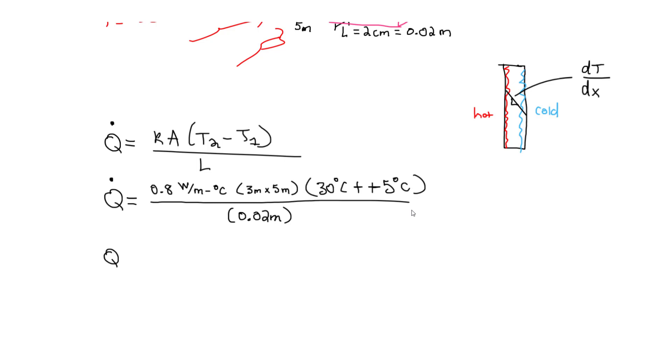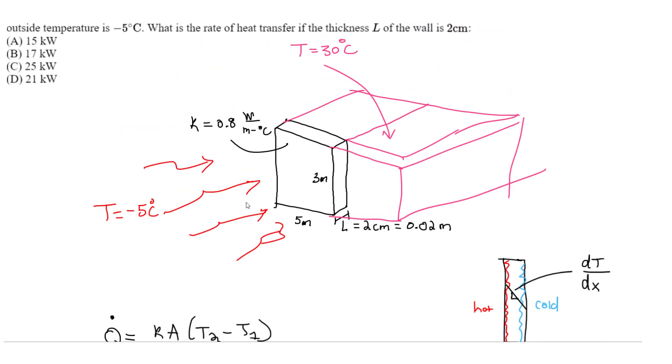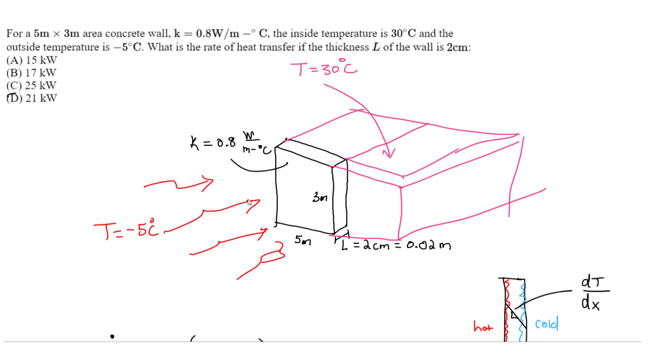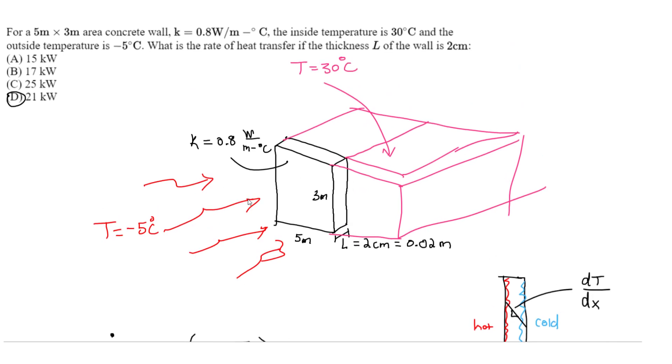So you can solve for Q dot. If we solve for Q dot, you should get around 21,000 watts. You just divide by 1,000 to get kilowatts. So it's 21 kilowatts. This will be our answer. Let's see our choices. It should be D. So let me know if you have questions. Don't forget to subscribe and like. And thank you.